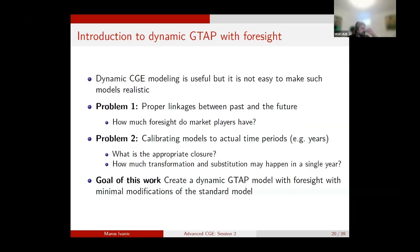Why is this important? The first efforts to make a dynamic GTAP model — I believe that was Terry Walmsley — she tried to create that and it took an amazing amount of work. It was just the recursive dynamic model. And it also created hesitation among researchers because they would have to learn a fairly different model to run, and there's a lot of value in sticking to the standard model and only documenting modifications of that model.